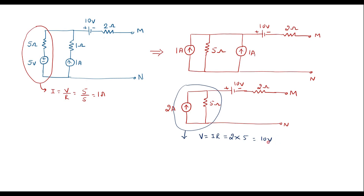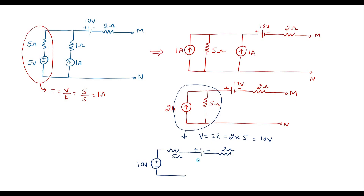The magnitude of the voltage source will be 10 volt. The head end of the arrow is positive and the tail end is negative, so its magnitude is 10 volt. This 5 ohm resistor should be connected in series with the voltage source. Now here I will connect this voltage source as it is, and the 2 ohm resistor will be connected as it is. This is plus/minus 10 volt, with terminal M and terminal N.